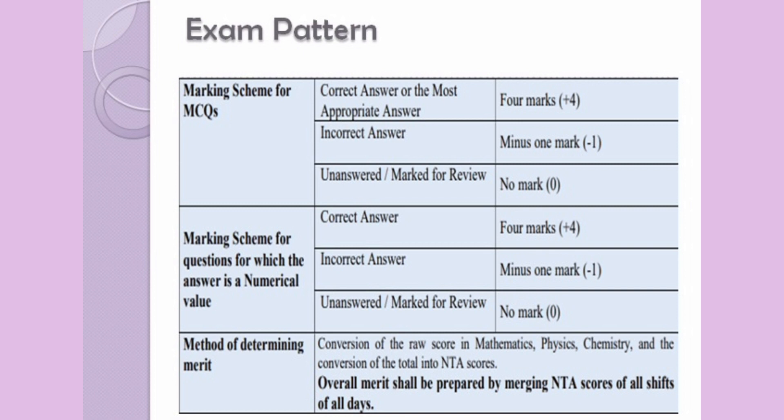The exam pattern of JEE Main 2023 varies as per the paper type. Candidates will be awarded four marks for a correct answer and one mark will be deducted for every incorrect response. There will be no marking for any unanswered question.